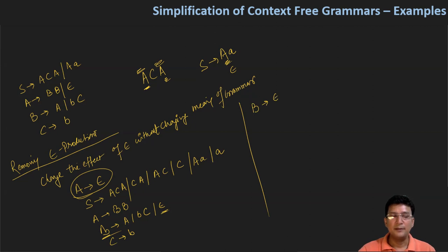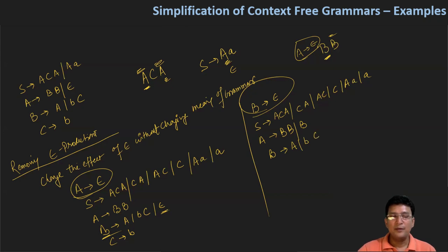Now let's try to remove B produces epsilon. If we eliminate this, first there will be no changes in S produces, because it has only A's, no B. So S produces A, CA, CA, A, C, C, capital A, small a. There is no other change here. A produces BB will have changes because we're putting B produces epsilon here. The right hand side symbol will first remain as is. Then if you put epsilon in place of first B, it will remain with B. If you put epsilon in place of second B, it will remain the same. And if you put epsilon in both places, A produces epsilon will result, which you already removed, so we won't include this. Then we have B produces capital A, small b capital C, and then we have C produces BD.